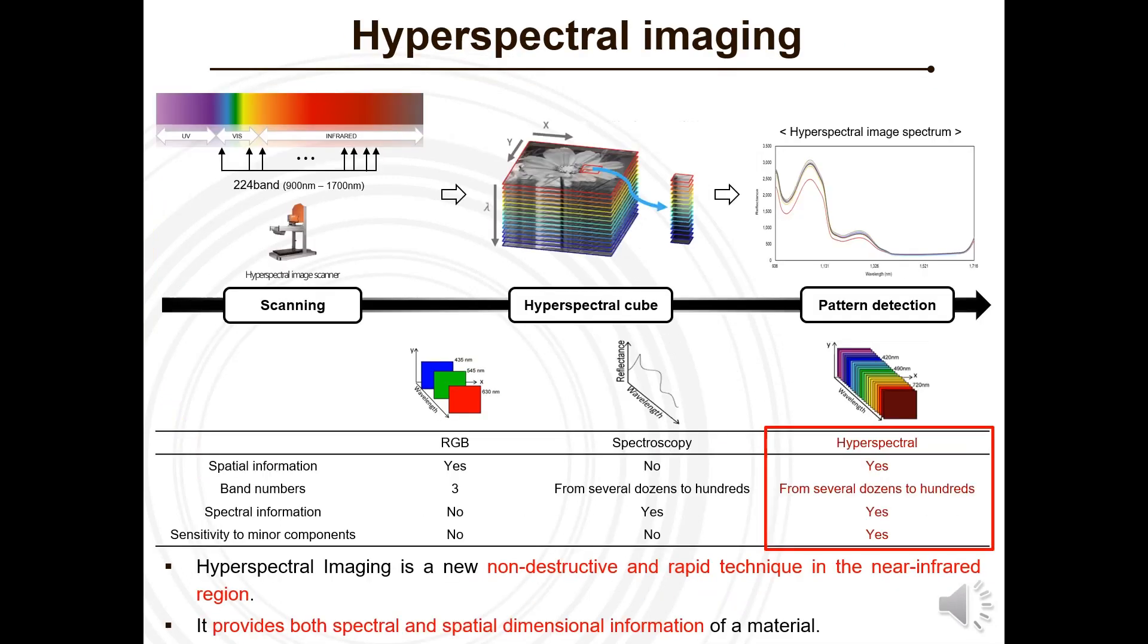The hyperspectral camera is an advanced device capable of analyzing both spatial and spectral information concurrently, achieved by dividing the near-infrared region into 224 distinct bands.